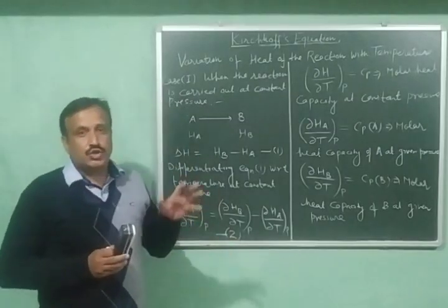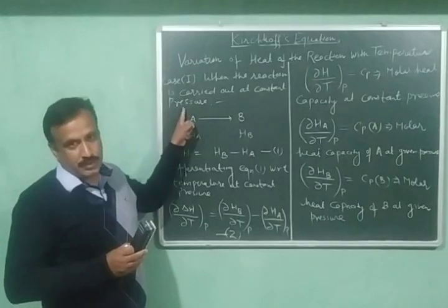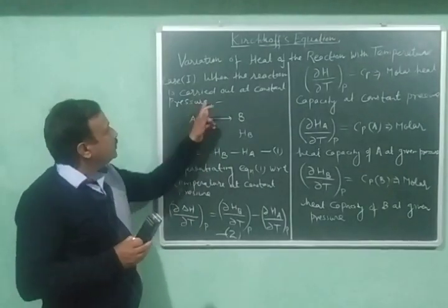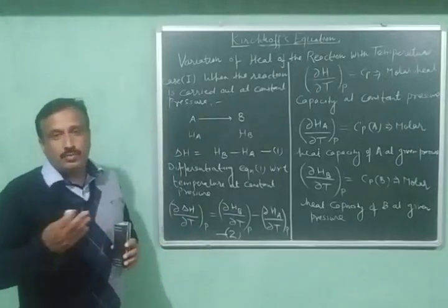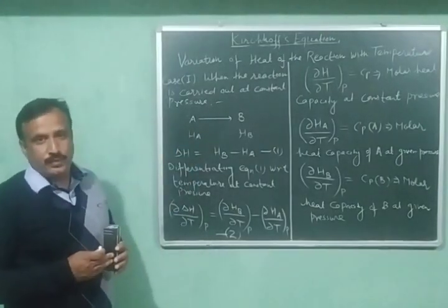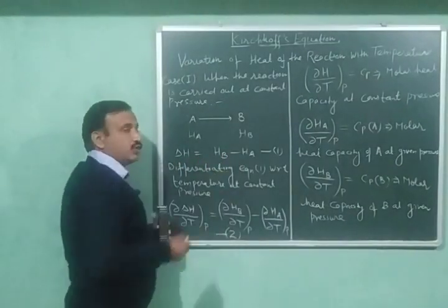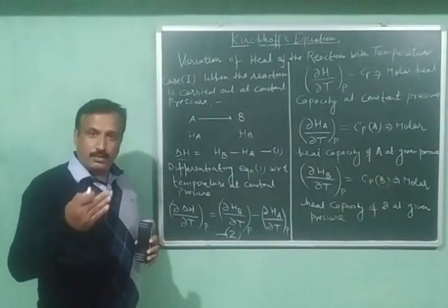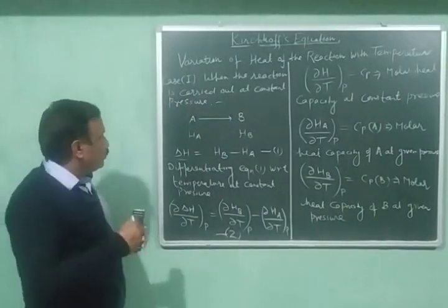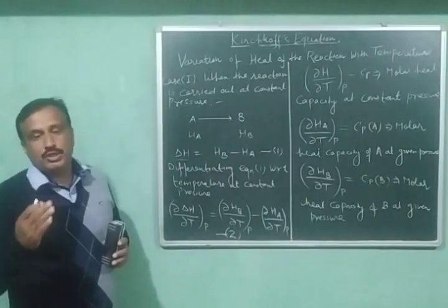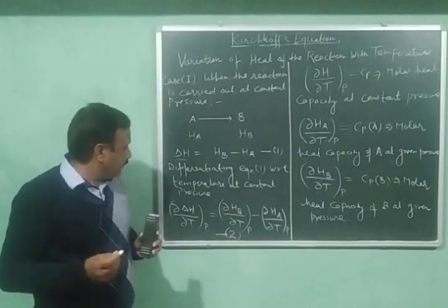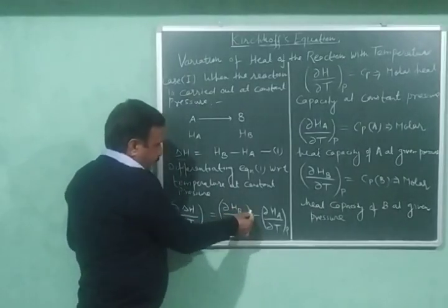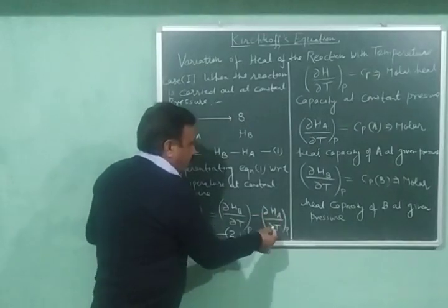First, I am deriving Kirchhoff's equation for reactions occurring at constant pressure. To derive this relationship, I have considered a general reaction in which A is changing into B. Let HB be the enthalpy of B and HA be the enthalpy of A. Then delta H equals HB minus HA. This delta H is the heat of the reaction at constant pressure. Now we will differentiate this equation with respect to temperature keeping the pressure constant, giving: (∂ΔH/∂T) at constant P equals (∂HB/∂T) at constant P minus (∂HA/∂T) at constant P.